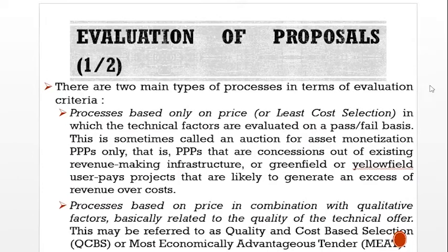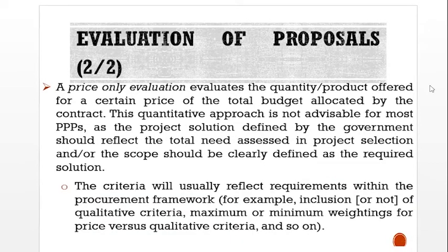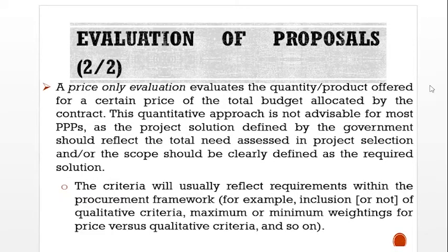This may be referred to as quality and cost-based selection (QCBS) or most economically advantageous tender (MEAT). A price-only evaluation evaluates the quantity or product offered for a certain price or total budget allocated by the contract. This quantitative approach is not advisable for most PPPs, as the project solution defined by the government should reflect the total need assessed in project selection and the scope should be clearly defined by the government. The criteria will usually reflect requirements within the procurement framework — for example, inclusion or not of qualitative criteria, maximum or minimum weights for price versus qualitative criteria, and so on.